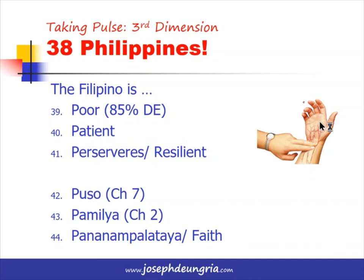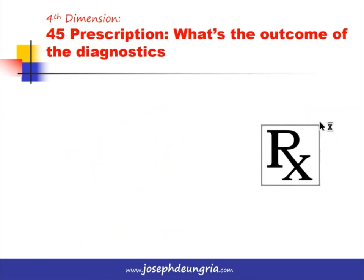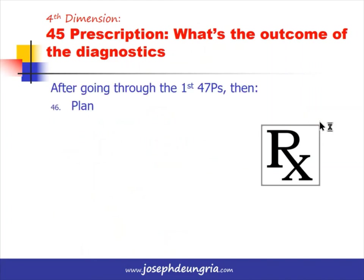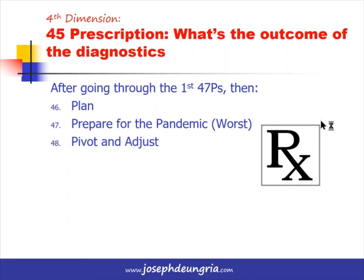Having considered all 44 Ps, what's the outcome of the diagnostics? After going through all of this, we still need to plan — prepare for the worst. The worst we've experienced affecting all markets and all industries is the pandemic. So we plan and hope for the best, but prepare for the worst. If the worst happens, we need to pivot and adjust — changing directions, restructuring, reorganizing, going out of the box, and thinking of new ways to provide a compelling value proposition to customers.